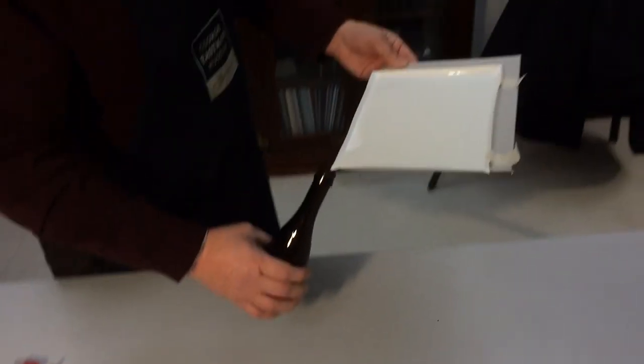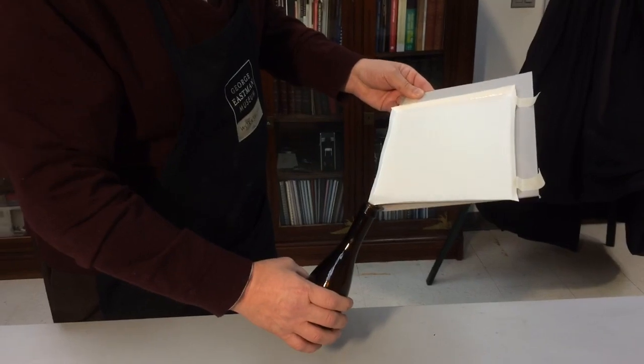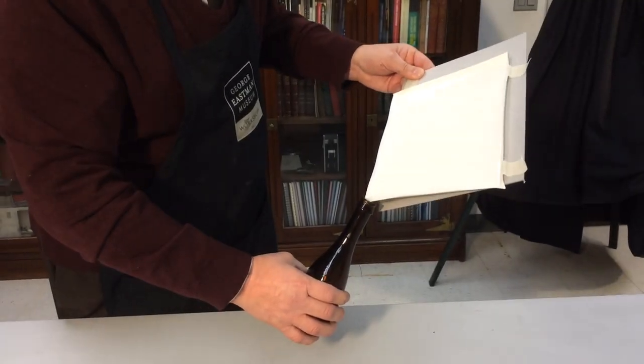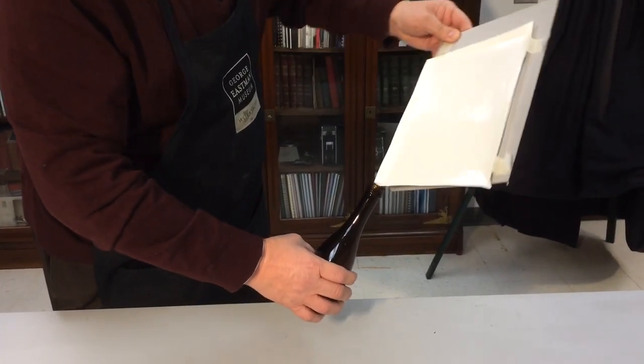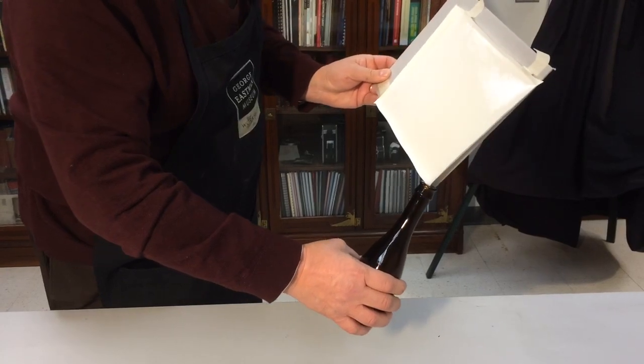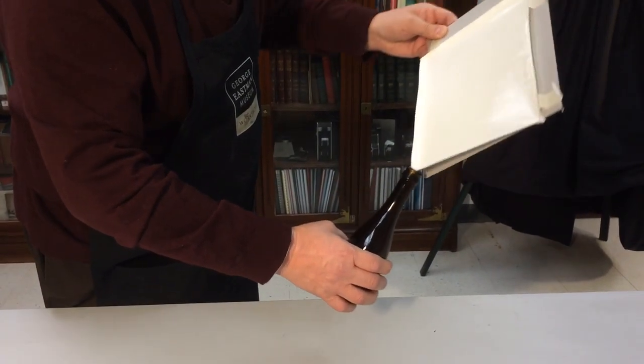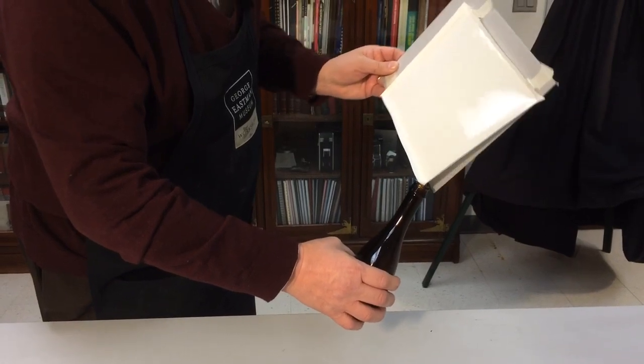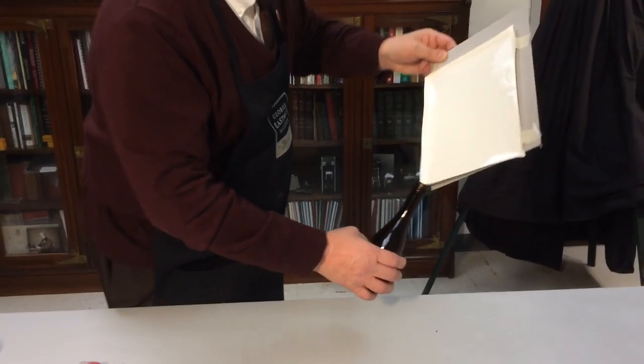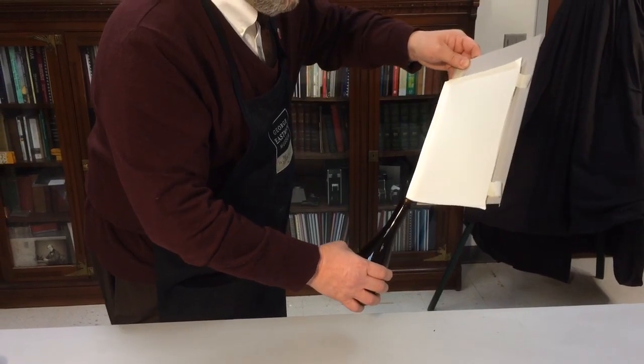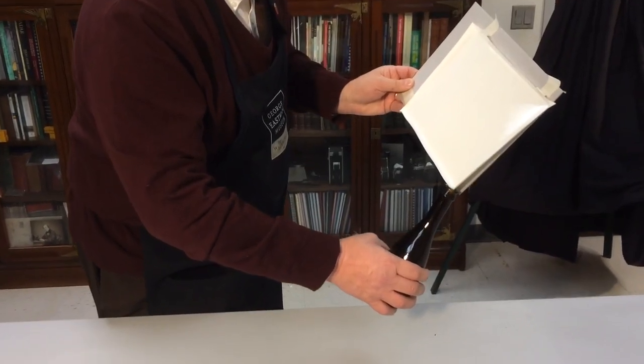And then I'm going to pour the excess back into the bottle. And as I drain the paper, I'm going to rock it. You don't need to rock it a lot. Just at right angles, very slowly. And that will help prevent crepe lines. Very much the same sort of artifact you'd get with coating a tintype or a glass plate.